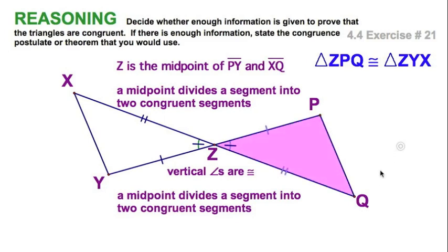And now we can visualize that this triangle, ZPQ, is congruent to its rotation. And that would be ZYX. So again, ZPQ congruent to ZYX.